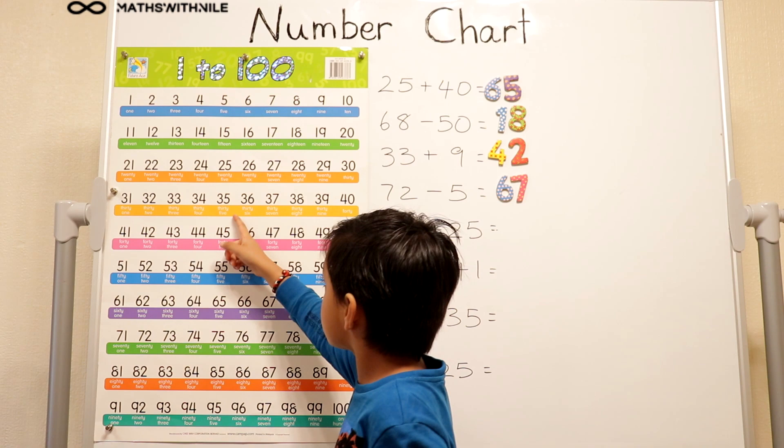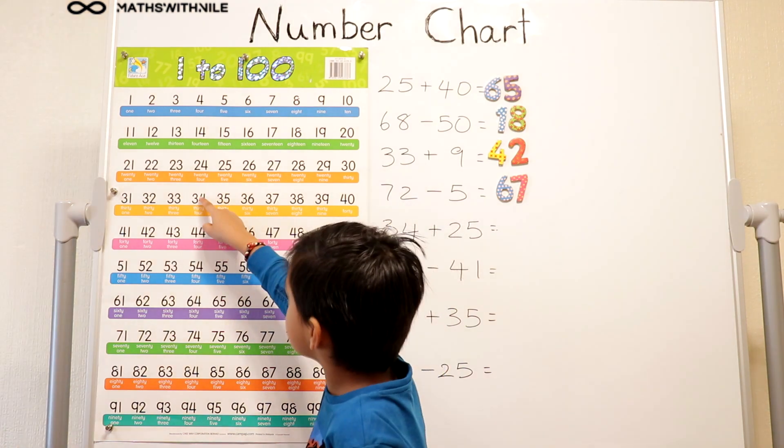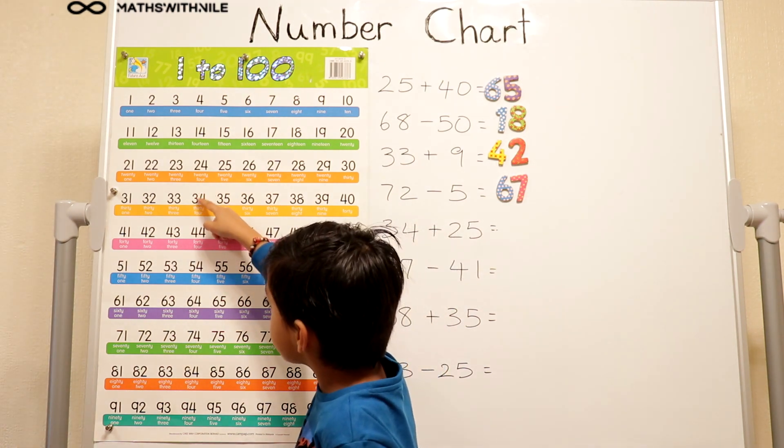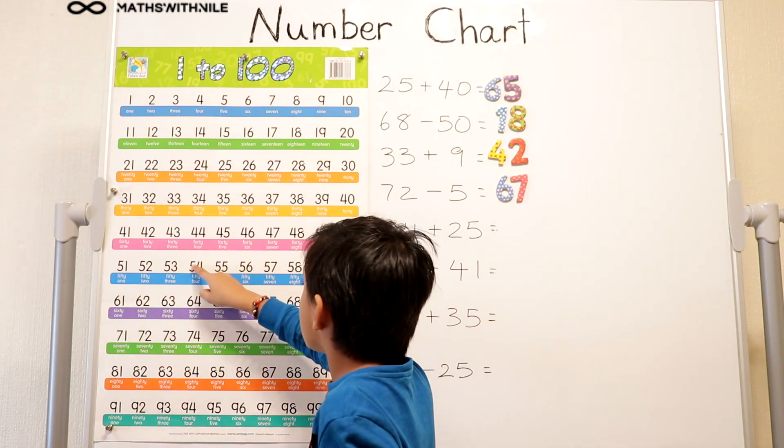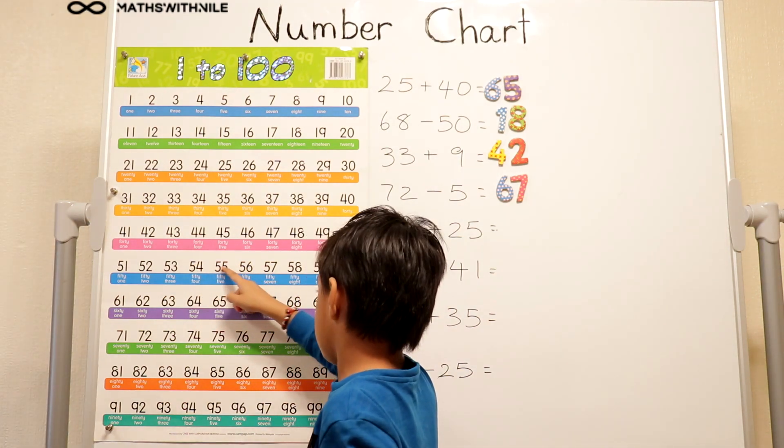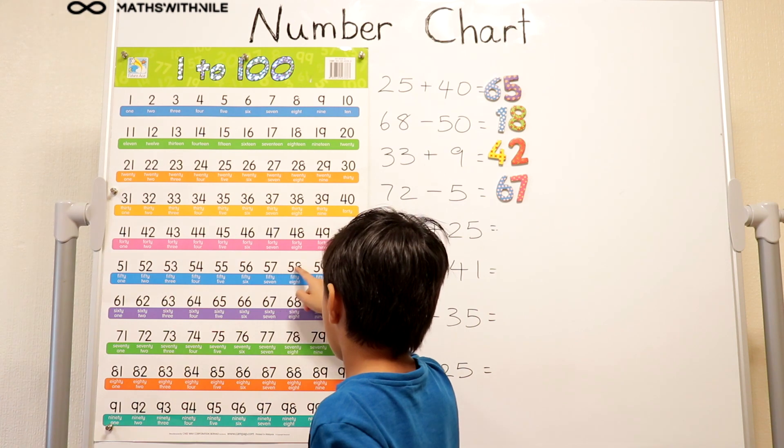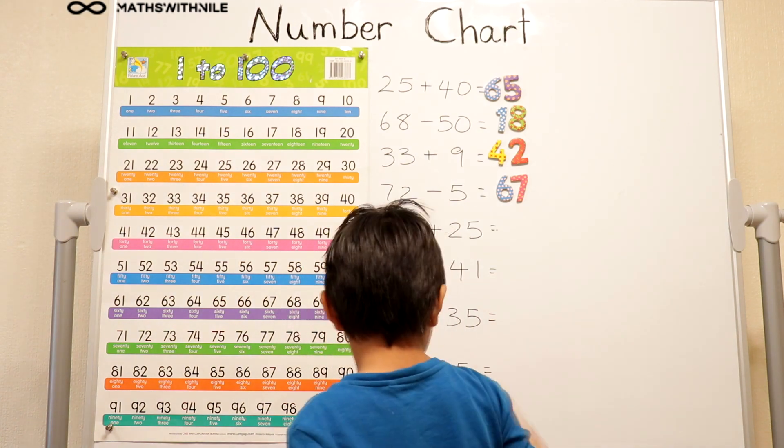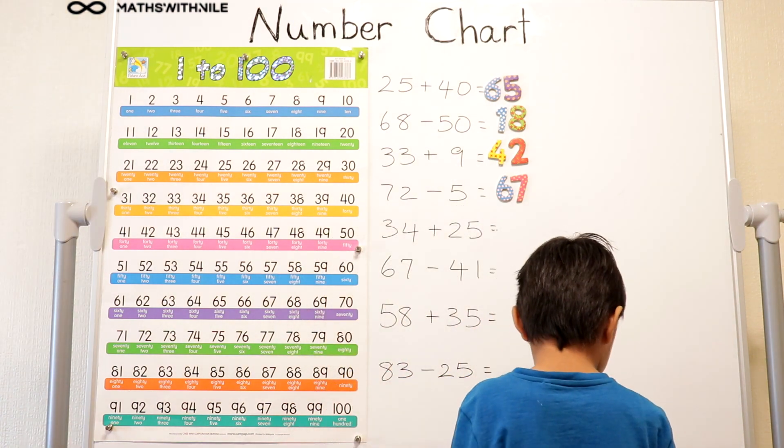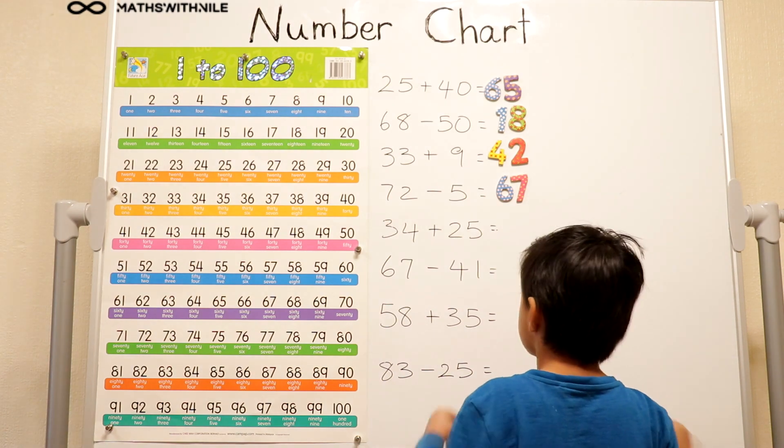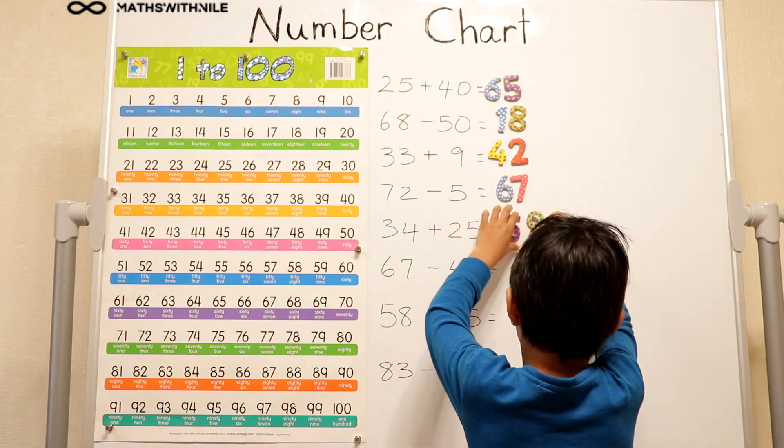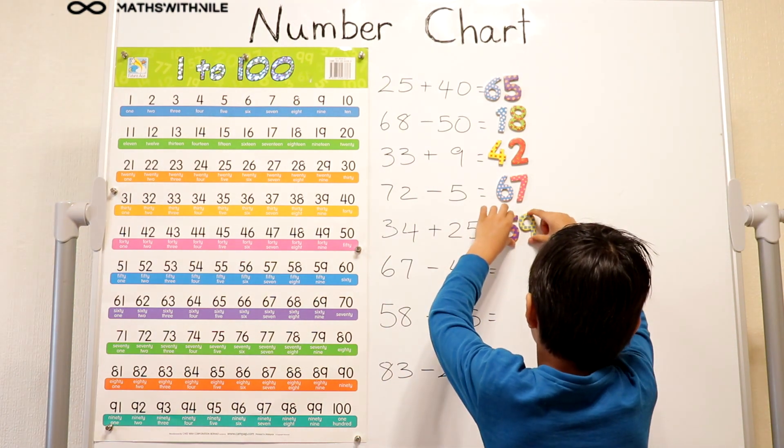So we got 34. 34 plus 25. So we got 34 plus 10, 20. 1, 2, 3, 4, 5. And it equals 59. Very good. So you went down twice for the 20 and then across 5 times for the 5. Yeah. Good job.